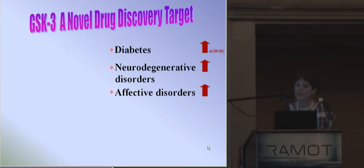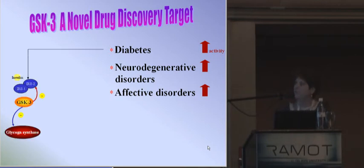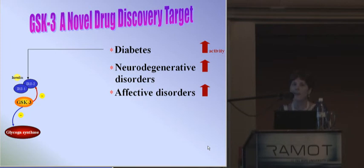In terms of mechanism, in the context of diabetes, GSK3 phosphorylates two important targets of insulin signaling: the IRS protein and glycogen synthase. And by this phosphorylation, it inhibits their function. So GSK3 is a negative regulator in insulin signaling.